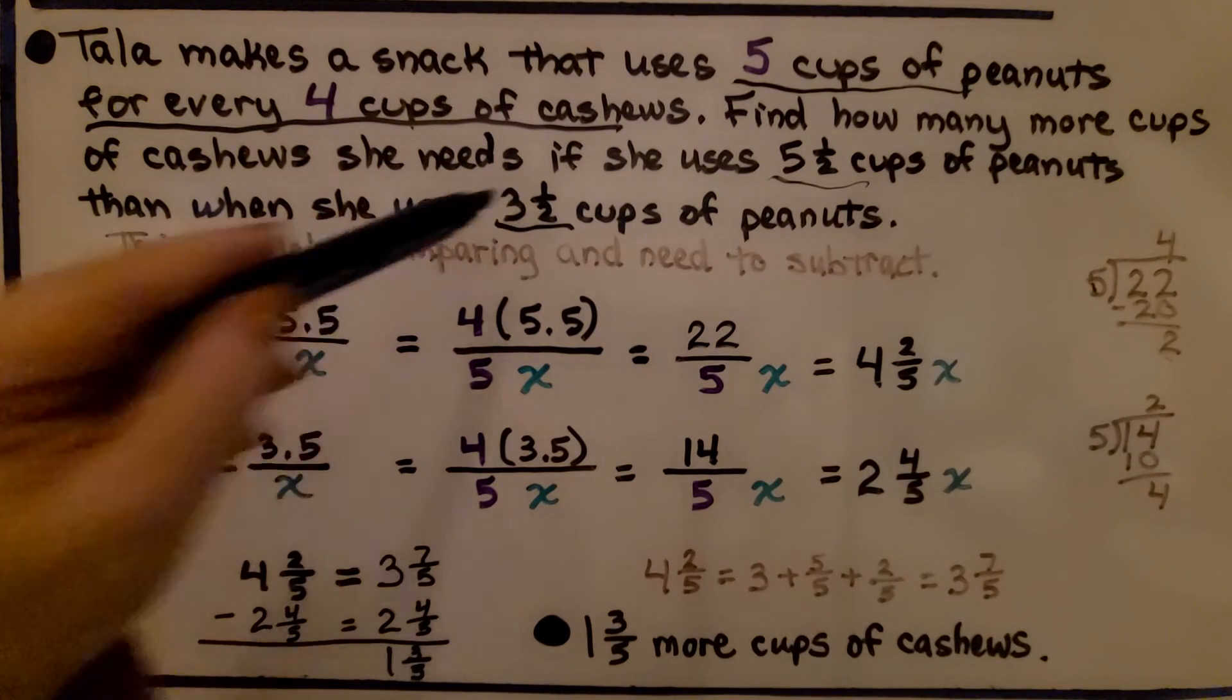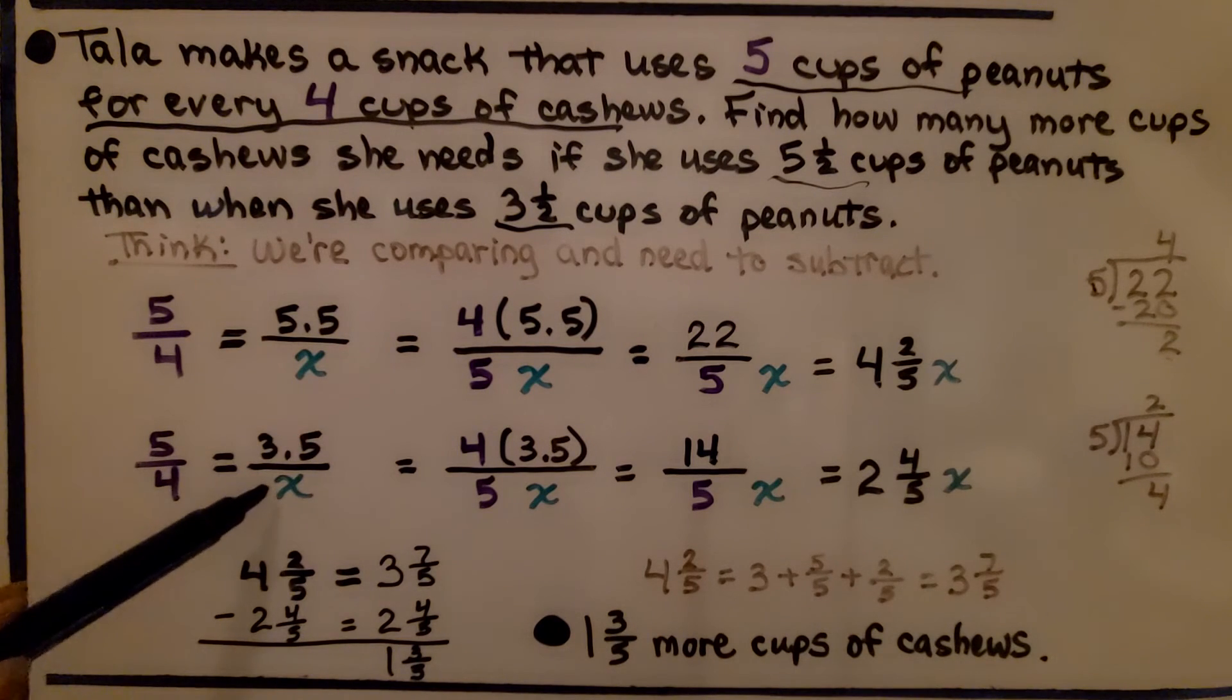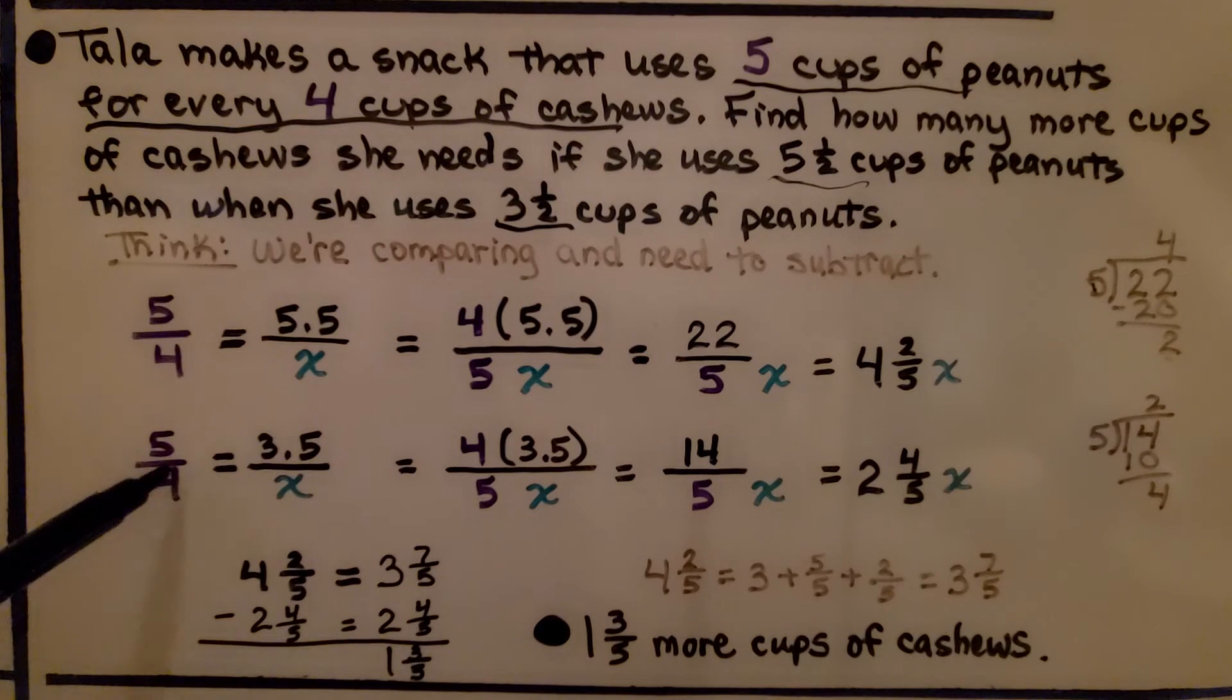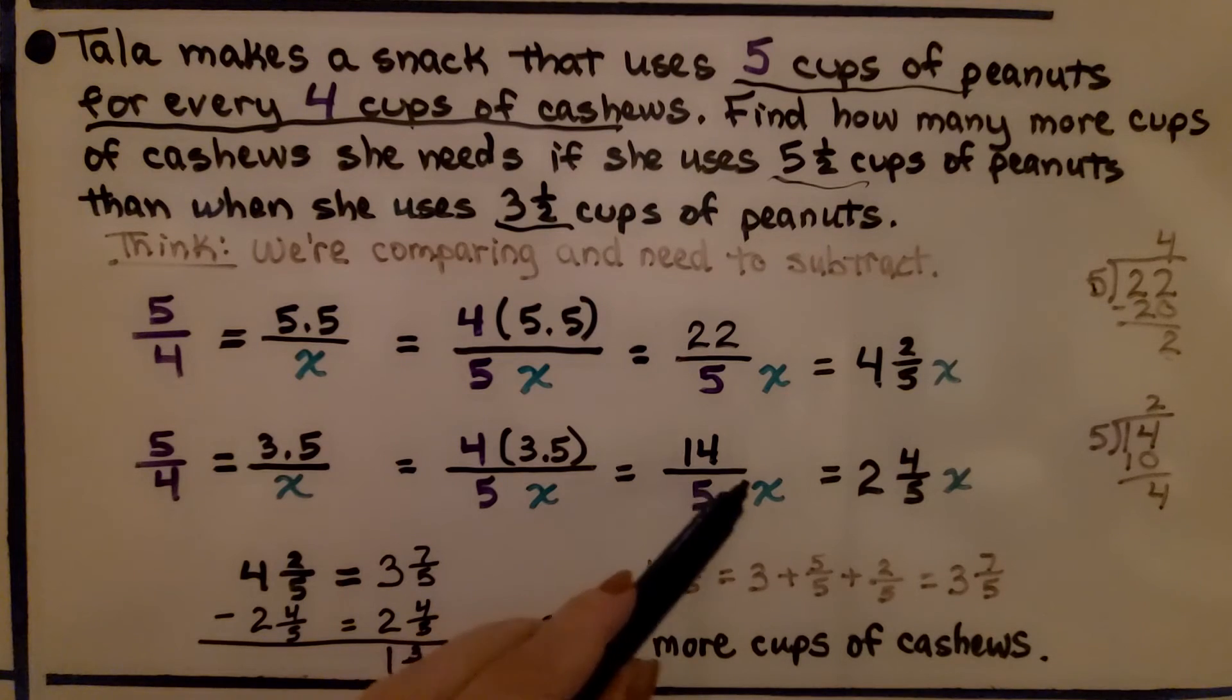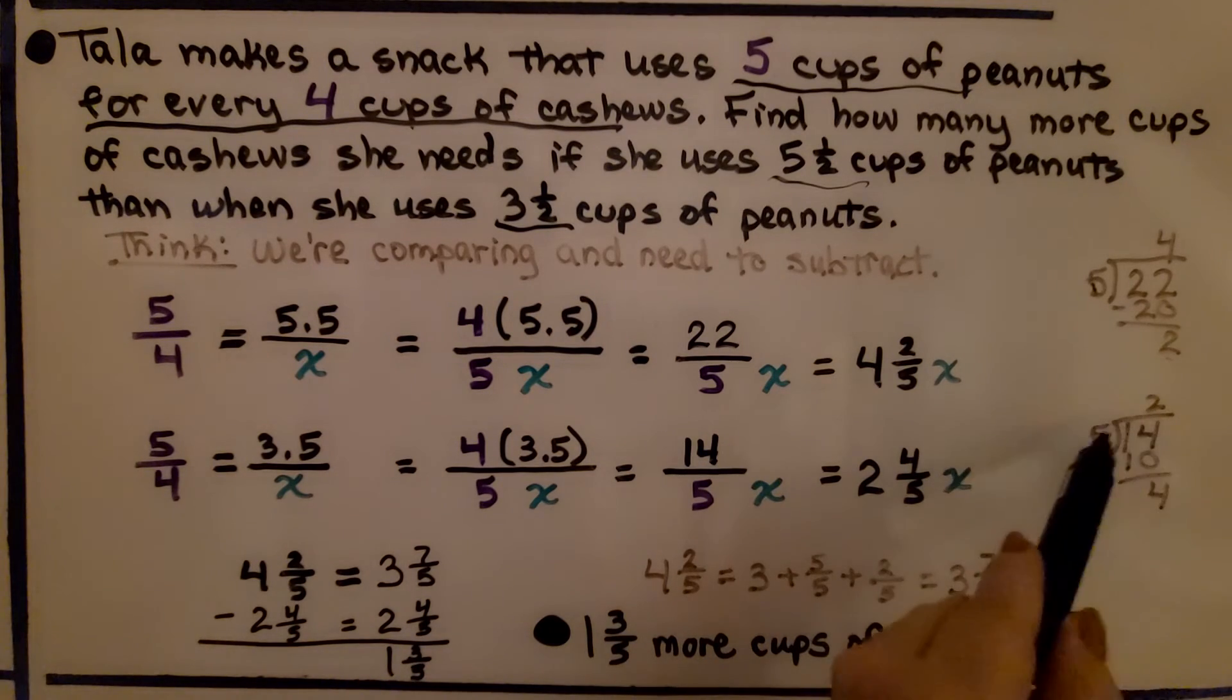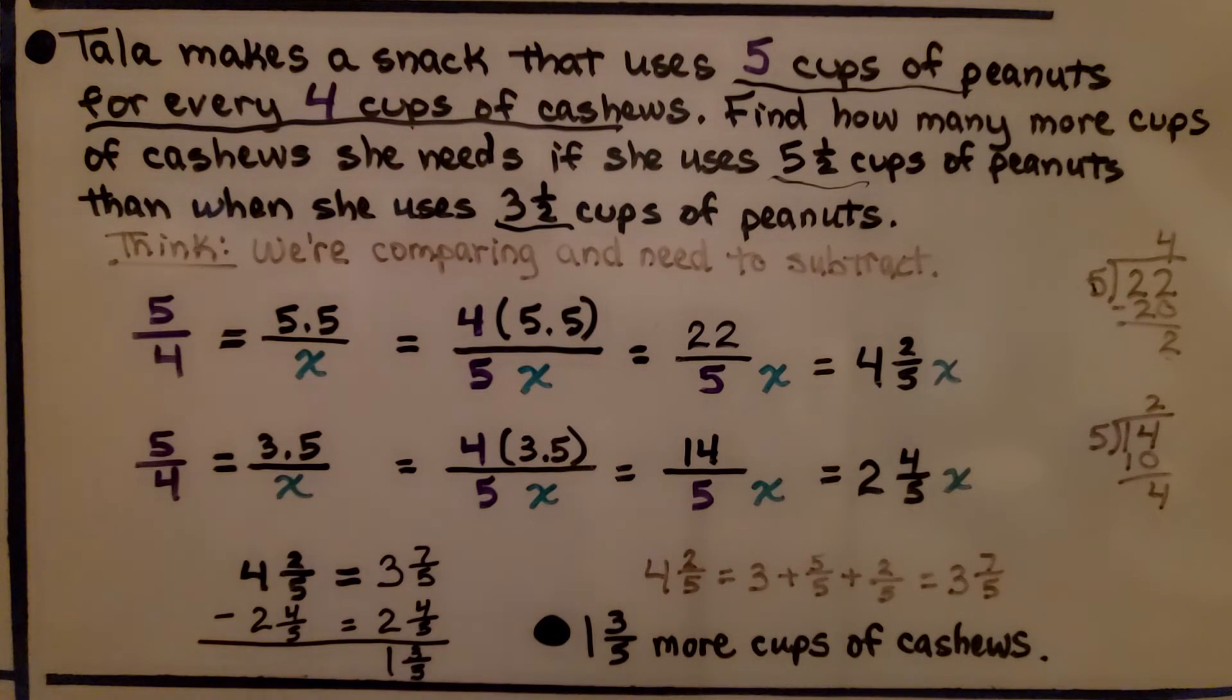Now we do it for the 3 1/2 cups. We do 5 to 4 is equal to 3.5 to x, and 4 times 3.5 is equal to 14, and that's going to be equal to 5x. So we have 14 divided by 5x, and 14 divided by 5 is 2 and 4 fifths.